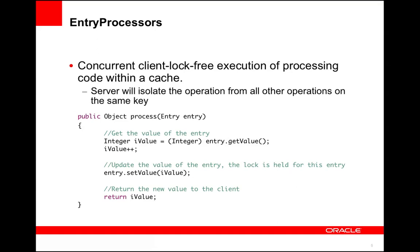The nice thing about using an entry processor is that they implicitly hold a lock on the key for which they are executing. Therefore, all code executing within the entry processor's process method can be considered an atomic operation against a given key. The best way to think about that is that the contents of your entry processor are completely isolated from any other operation on the same key, which generally frees the developer up from having to worry about concurrency concerns in the context of their implementation.